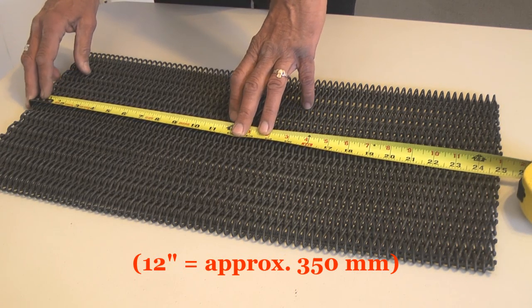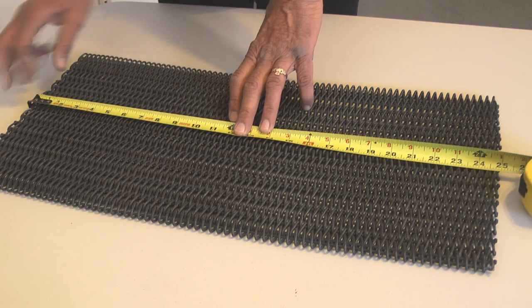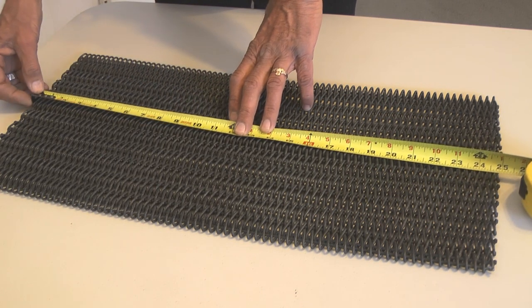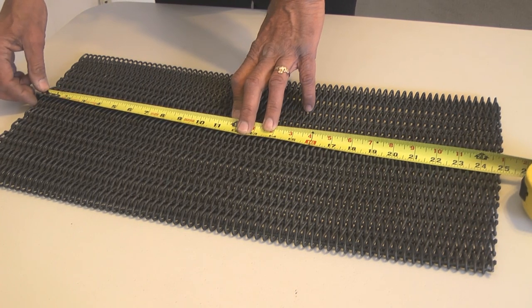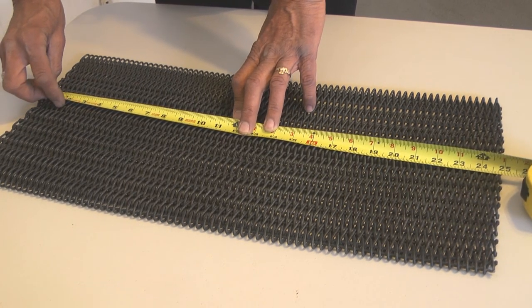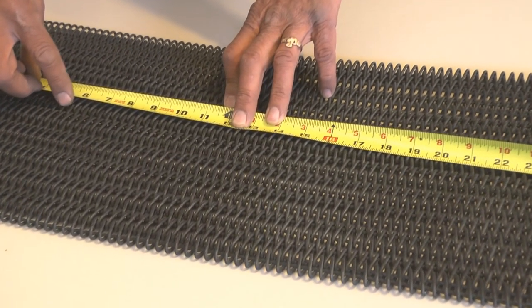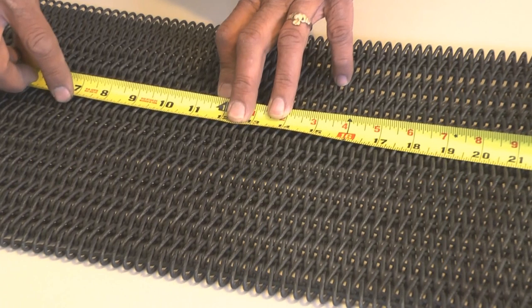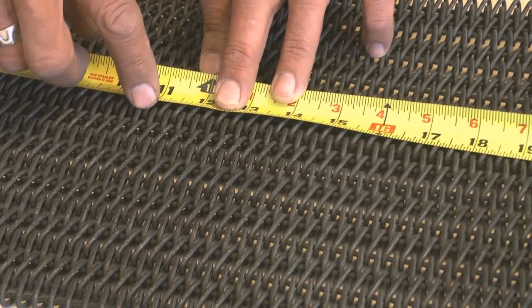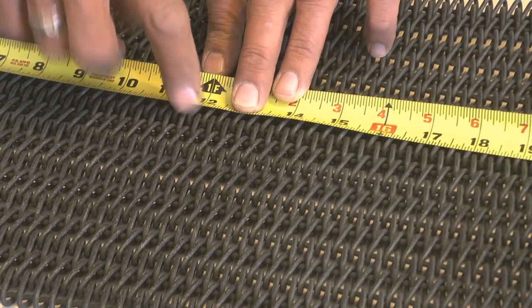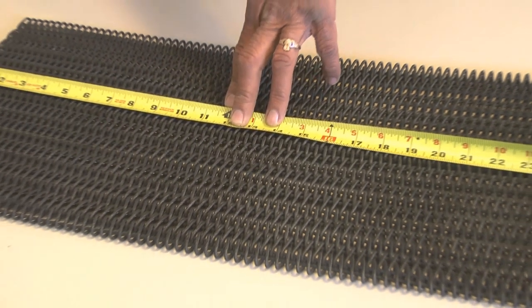You get that number simply by counting the spirals as they exist. Lay a tape down on the belt, start with the spiral at the outermost edge of the belt, count that as 1, then 2, 3, 4, 5, 6, 7, 8, 9, 10, 11, 12, 13, 14, 15, 16, 17, 18, 20, 30, 31, 32, 33, 34, 35, 36. So the first number in the specification for this belt is the number 36.